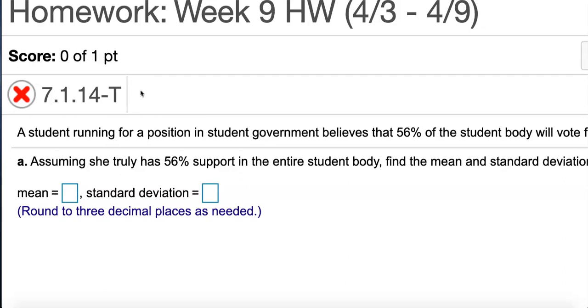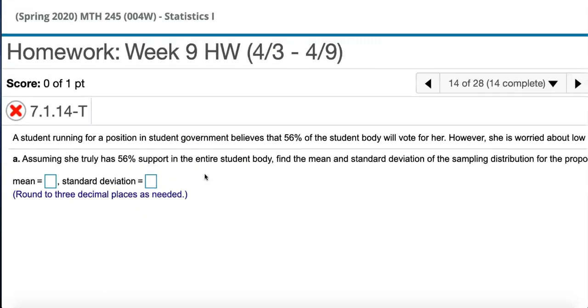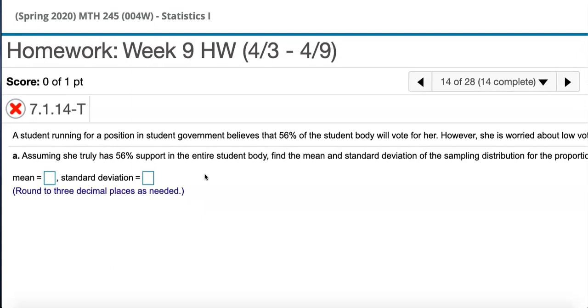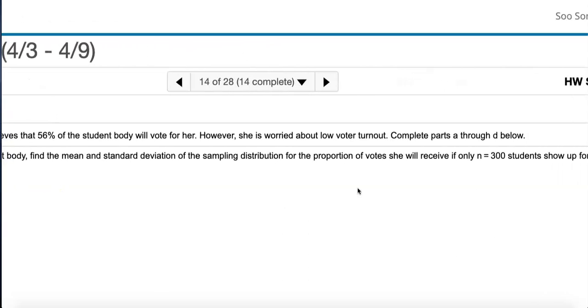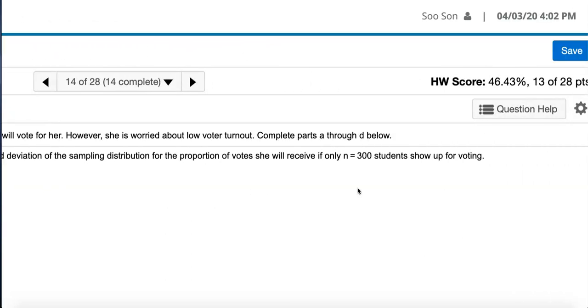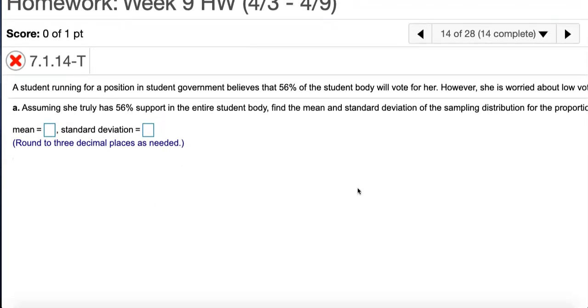A student running for a position in student government believes that 56% of the student body will vote for her, however she is worried about low voter turnout. Complete parts A through D below assuming she truly has 56% support in the entire student body.